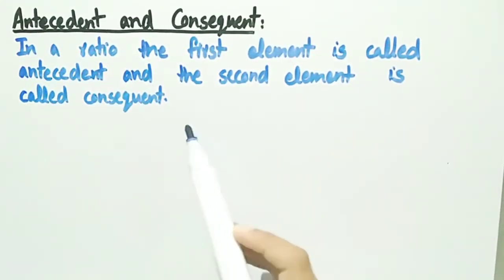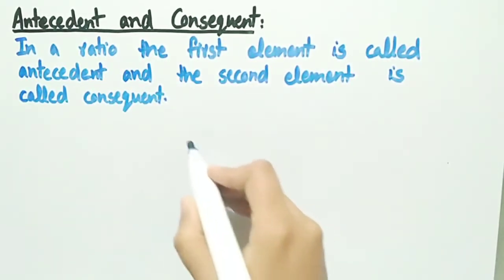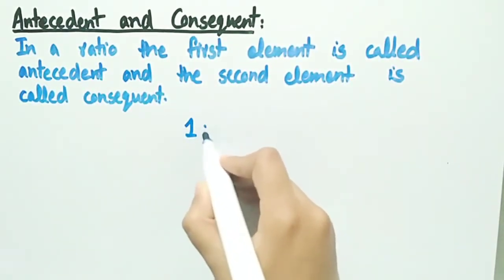In a ratio, the first element is called antecedent and the second element is called consequent. For example, if we consider a ratio 1 ratio 2, then 1 is antecedent and 2 is consequent.